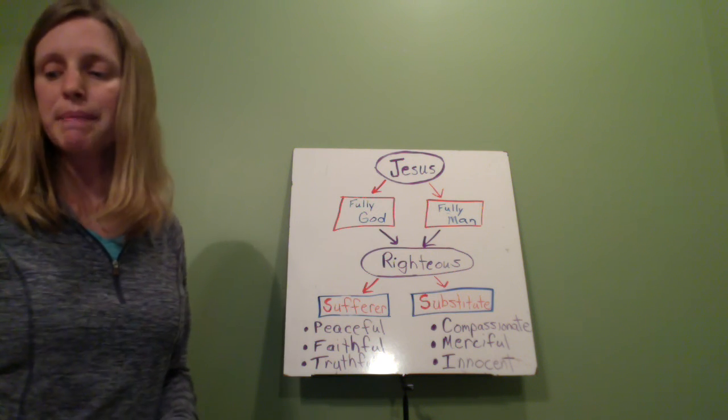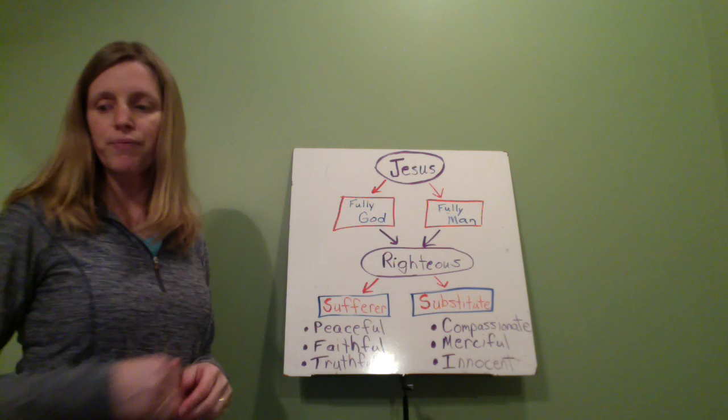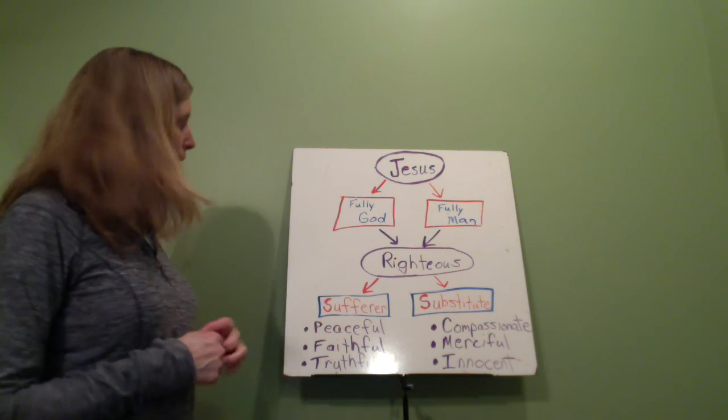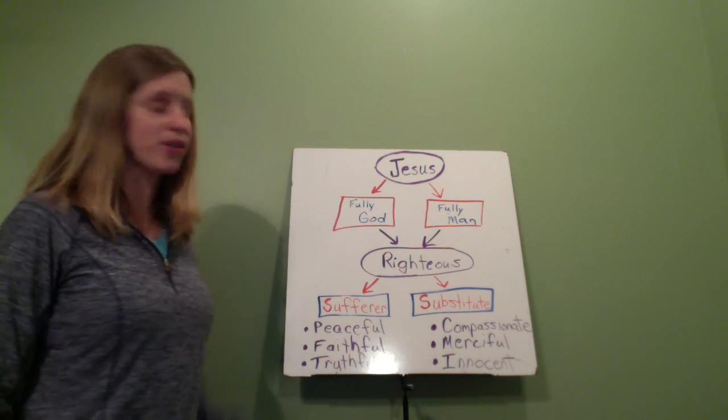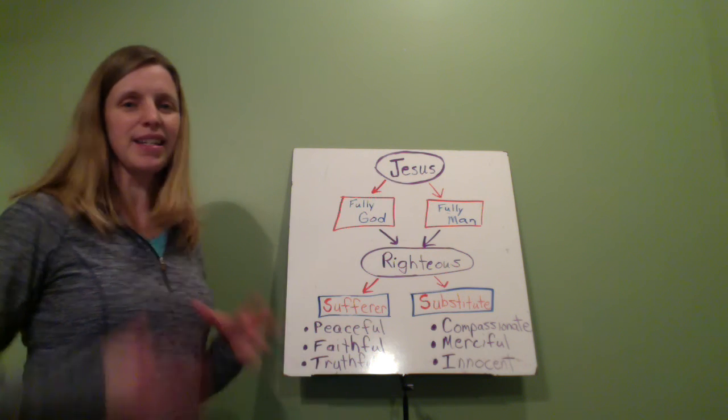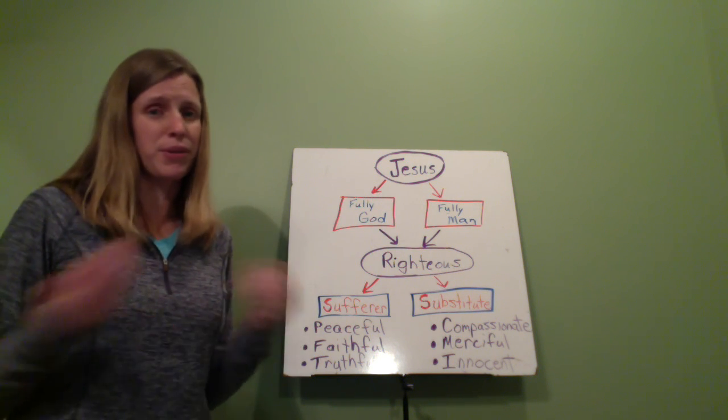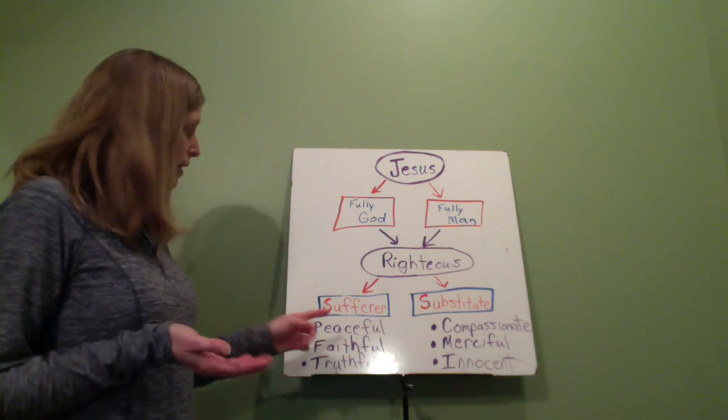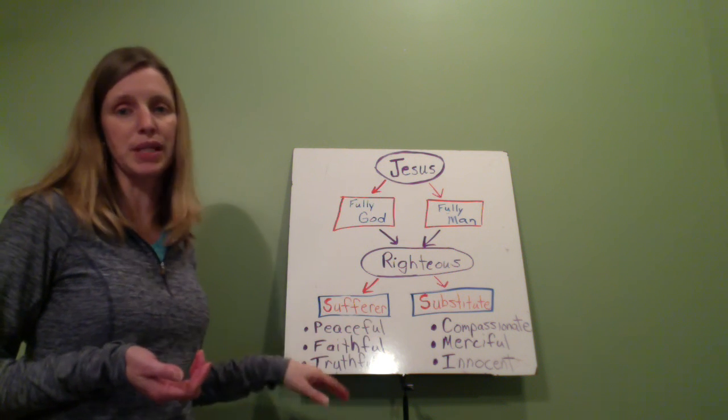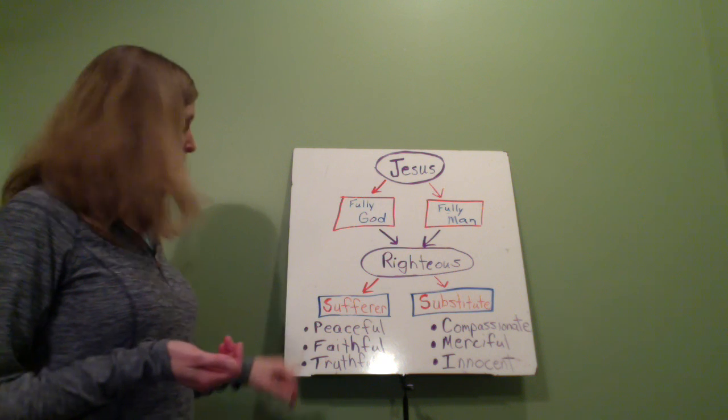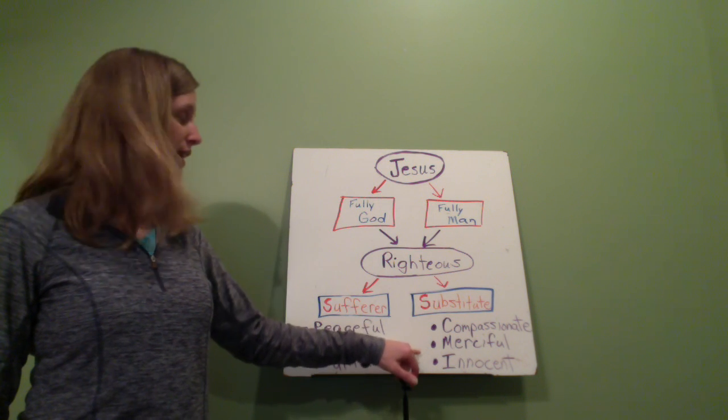So this reminds us, this little map can remind us about Jesus's death, and you can kind of tell the story using this. So the thing that I really want you to remember about this is because Jesus was fully God and fully man, he was righteous or without sin. And so he was able to respond in this time of his death as it was very horrible, like probably one of the most horrible deaths that we would learn about. Yet, because of his being fully God and without sin, he was able to respond in all these ways, in a peaceful way, in a faithful way to Peter, in a truthful way, in a compassionate way, merciful and innocent. And so he was able to respond in all these ways.